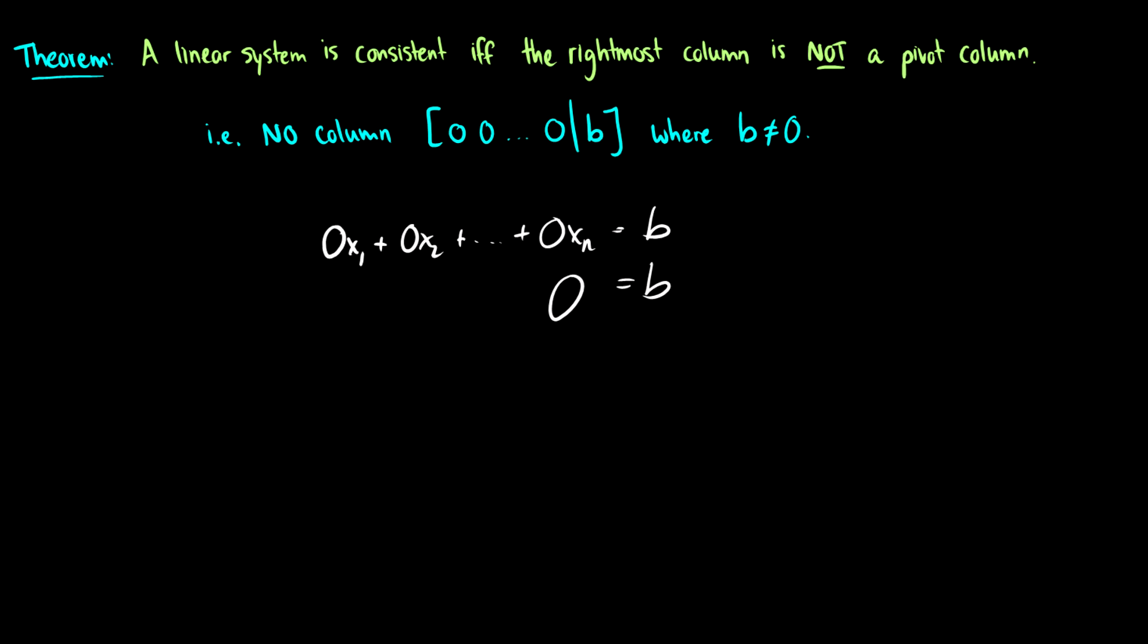So this is a very important theorem when looking at inconsistence. Now what do I mean by a pivot column? What is a pivot column? A pivot column means that we have a pivot position in that column.